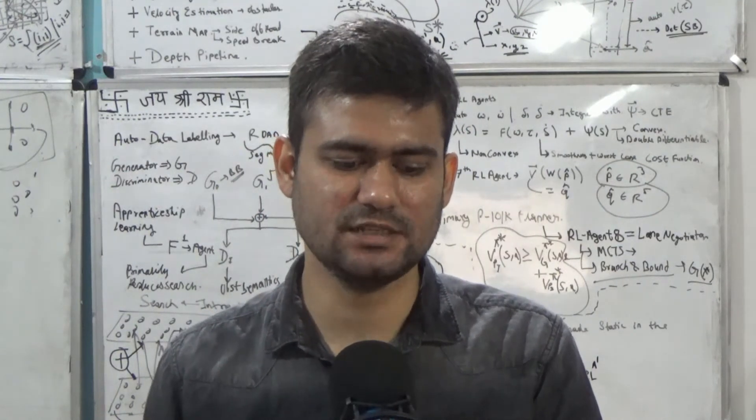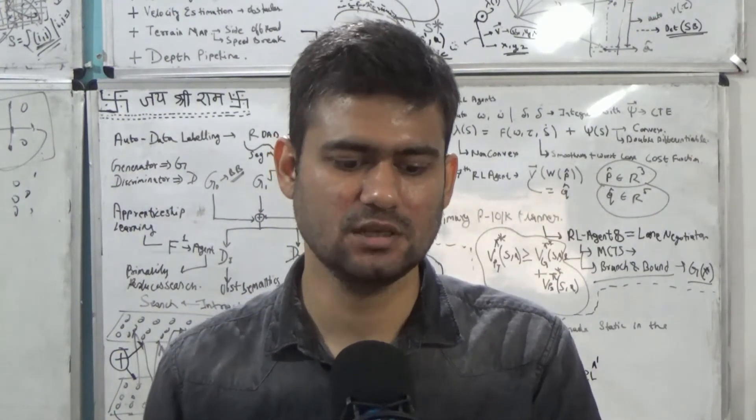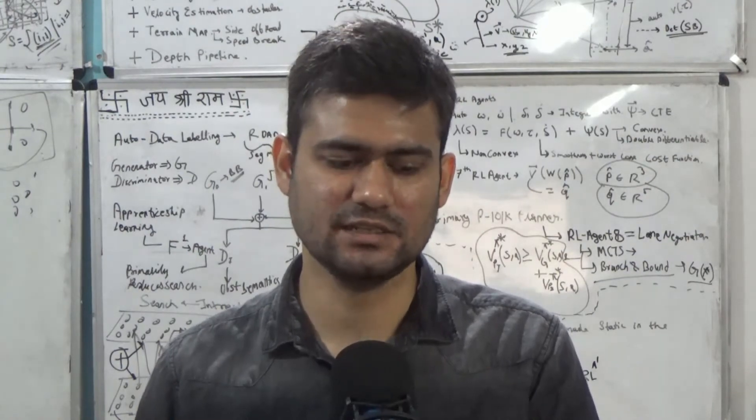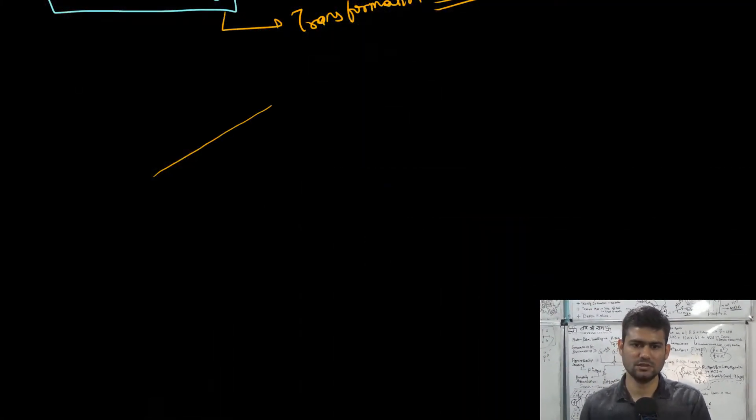To understand how it preserves edges while smoothing the images, consider this example. Assume we have an edge over here and the pixel is on the left side of this edge. So we have a pixel over here and we can form the quadrants. This is our red region and assume that this is our yellow region.